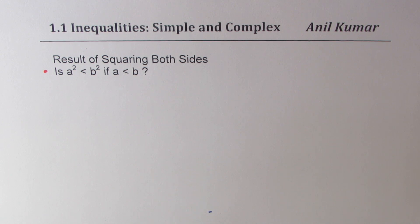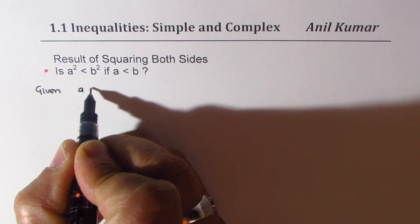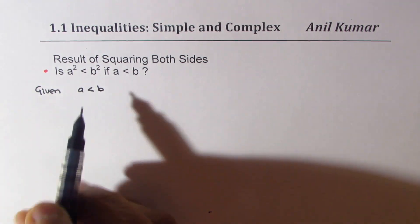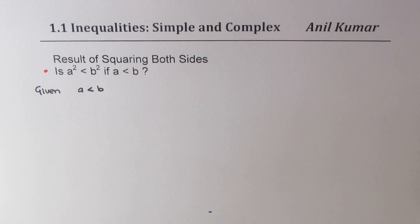Is a² < b² if a < b? In this case, what are we given? We are given that a < b. So, we have to check what happens when we square both sides. Let's take an example.